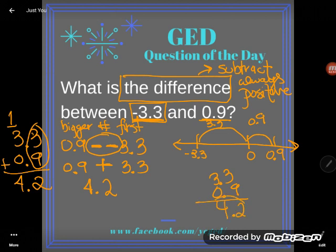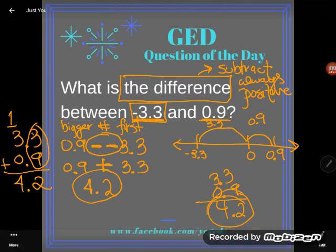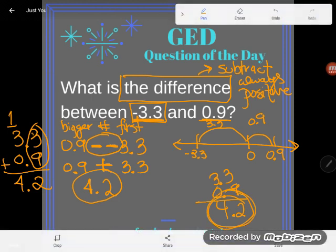And again, we get 4.2 units. So it doesn't matter if you do it mathematically or you do it using a number line model. We're going to get the same answer here. These two numbers are 4.2 units apart.